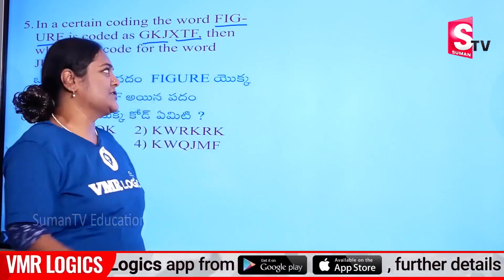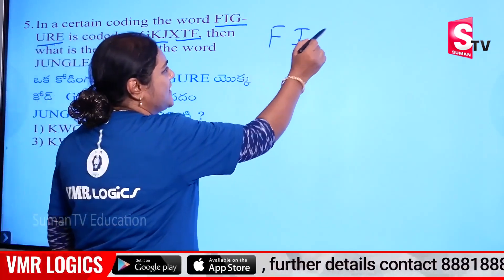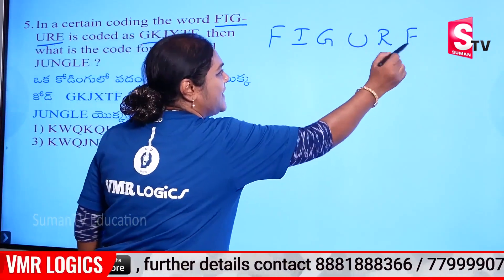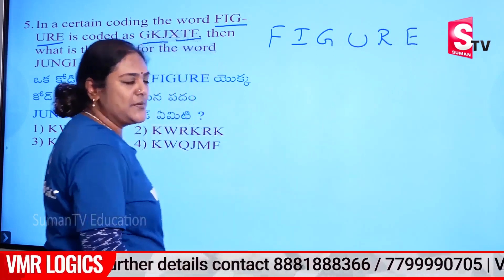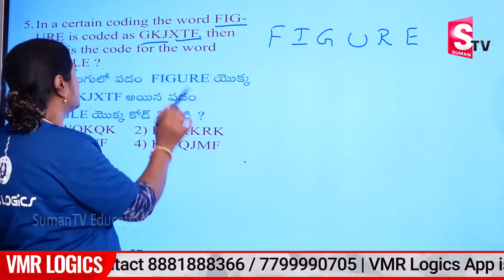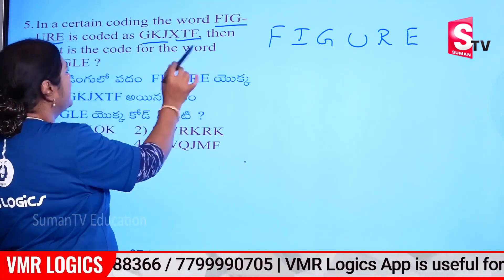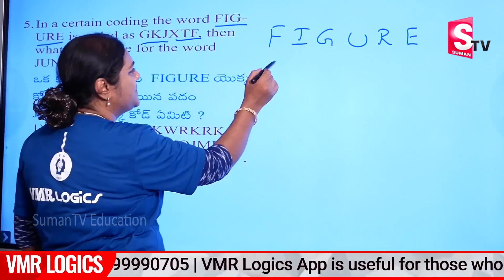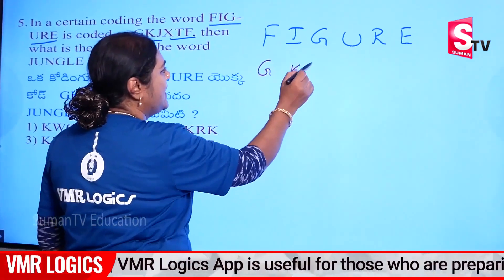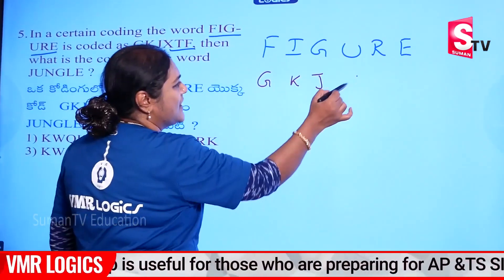I'm going to ask you. Alright — F, I, G, U, R, E. I'm going to ask you the word: Code. Code — letters each other. Here it is: G, K, J, G, K, J, X, T, F. X, T, F.